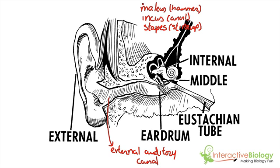I'm going to be using malleus, incus, and stapes. The way I typically remember this is M-I-S — malleus, incus, and stapes. So those are the three bones: one here, one there, and this is the third one here.